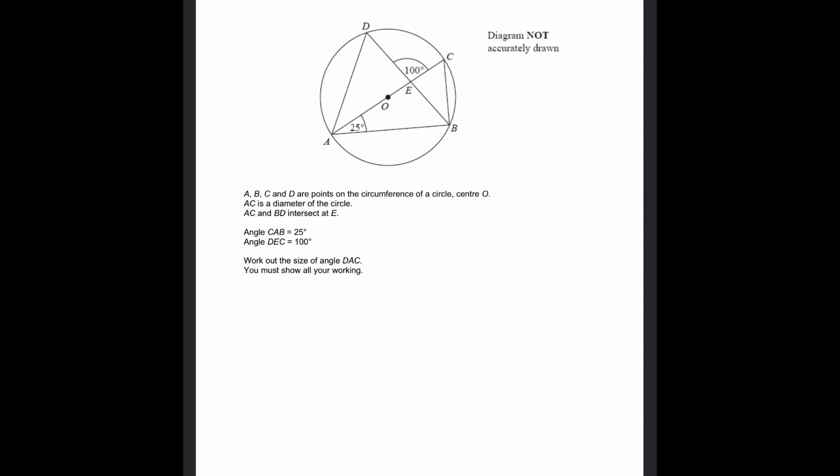Angle CAB equals 25 degrees. Angle DEC is 100 degrees. Work out the size of angle DAC, this angle here. You must show all your working.